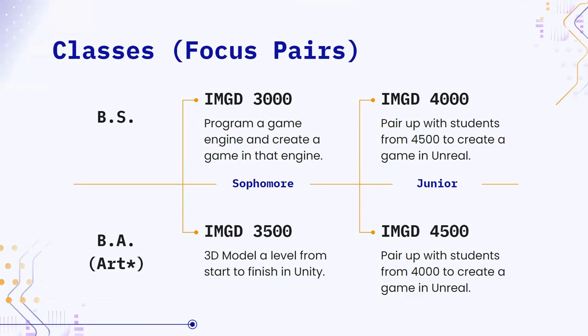Focus pairs are actually something everyone does, even Bachelors of Tech — they just don't know it's called focus pairs. Focus pairs are essentially the two courses in IMGD that you will be taking as the core of your concentration or degree. I've listed the visual and technical art focus pair here, which is the same, as well as the Bachelor of Science focus pair. From a tech side, 3000 and 4000 are probably some of the most knowledge you're going to get out of a single course. 3000 has you program a whole game engine, and 4000 has you make a whole game in Unreal by collaborating with students from 4500.